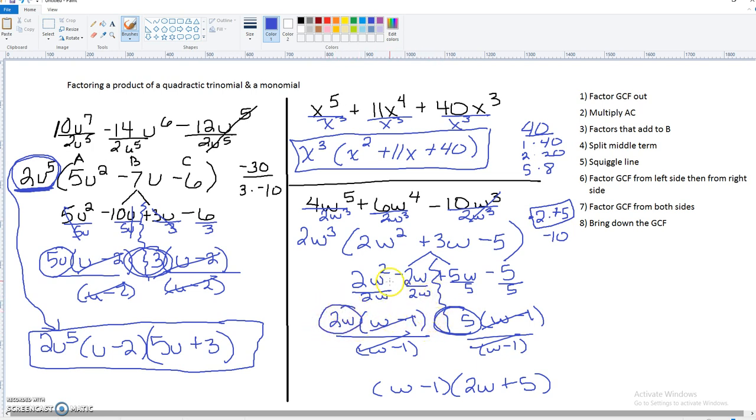Now, this is where you've got to be very careful. Remember, we factored something out in the beginning. So we need to bring it down. So we're going to bring that 2W cubed down. And that is our whole entire answer. I'll see you later.